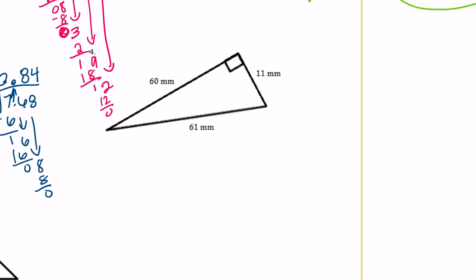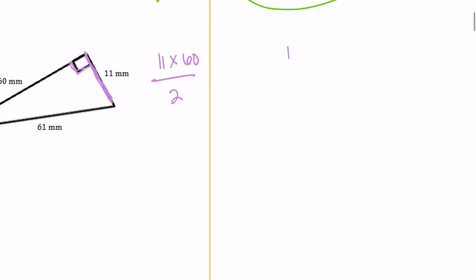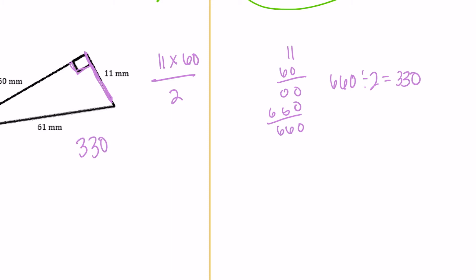Number 4: here's our right angle, so it doesn't matter which side is the base and which is the height. We have 11 times 60, then divide by 2. 11 times 60 is 660, and 660 divided by 2 is 330. So this is equal to 330 millimeters squared.